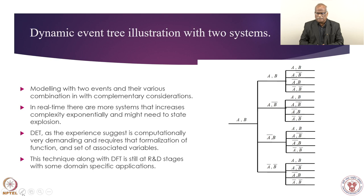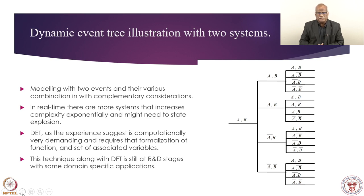We have sixteen end states in this illustration. In reality there are more than two systems — one can imagine twelve safety systems including support systems. So managing with two events leads to a state explosion, where each branch gives an accident sequence. In short, DET as experience suggests is computationally very demanding and requires formulation of functions and a set of associated variables.